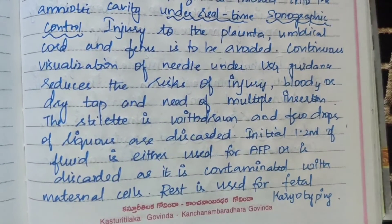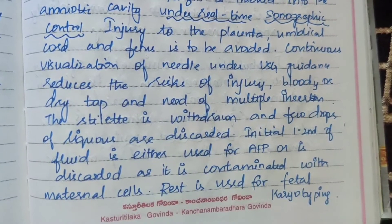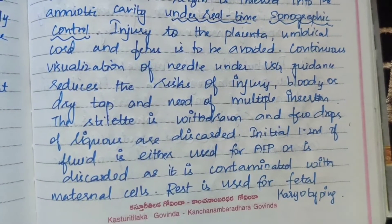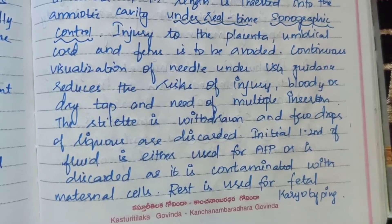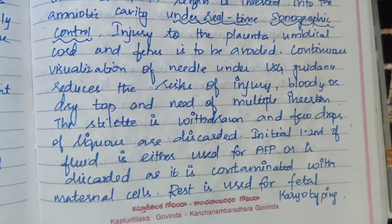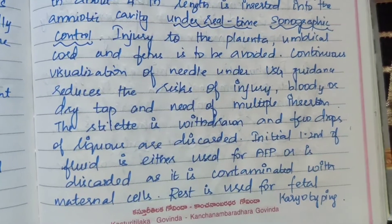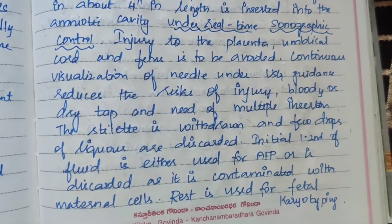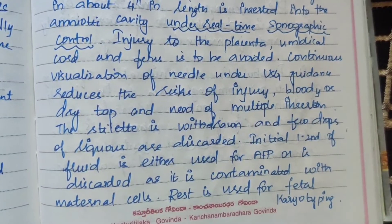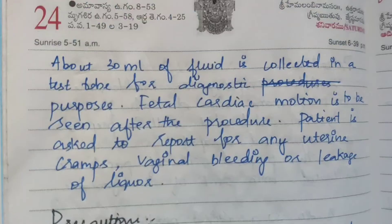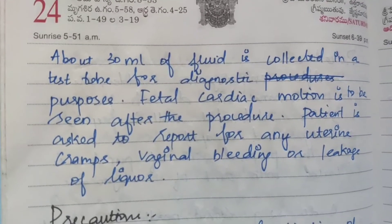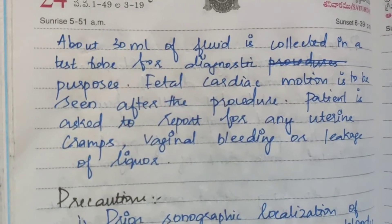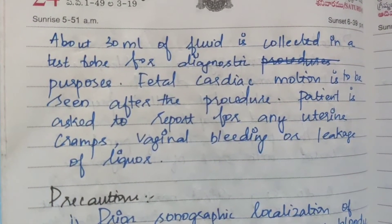The first 1-2 ml of fluid is discarded as it may be contaminated with maternal cells. The rest is used for fetal karyotyping. About 30 ml of fluid is collected in a test tube for diagnostic purposes. After the procedure, fetal cardiac motion is checked. The patient is asked to report any uterine cramps, vaginal bleeding, or leakage of liquor.